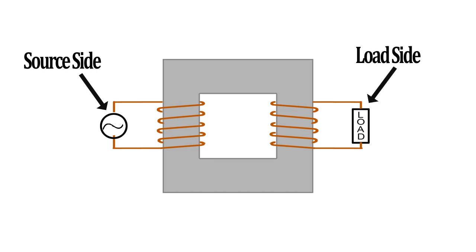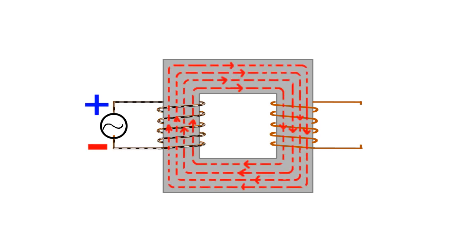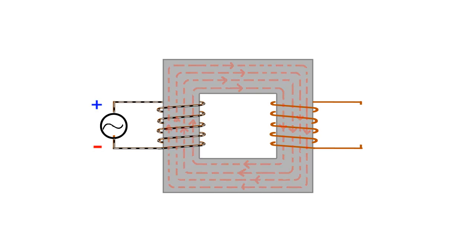Transformer on no load means when there is no load connected to the secondary side or load side, and primary side or source side is energized by an AC supply.